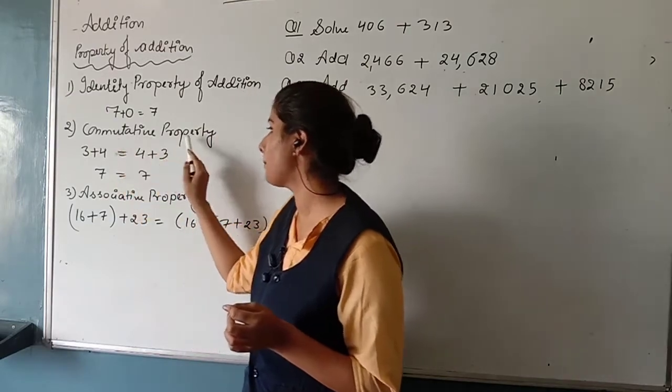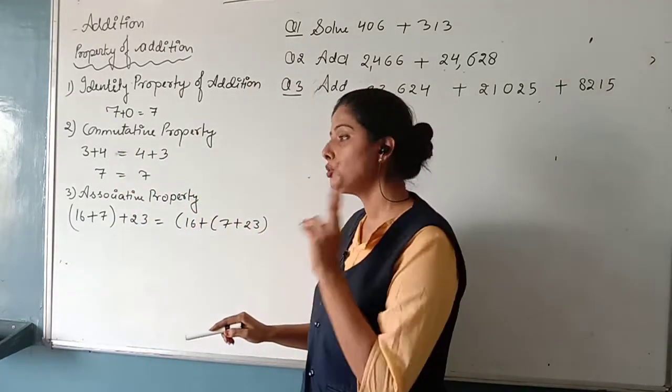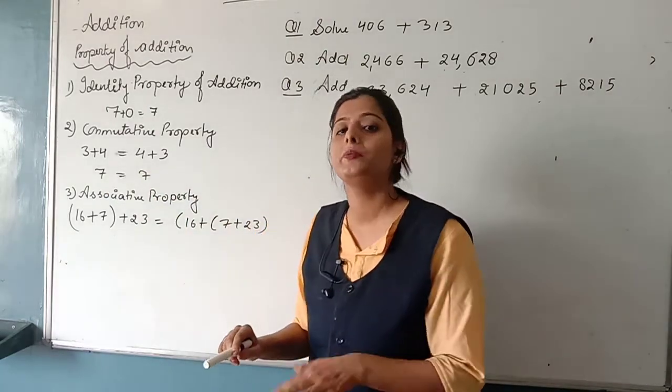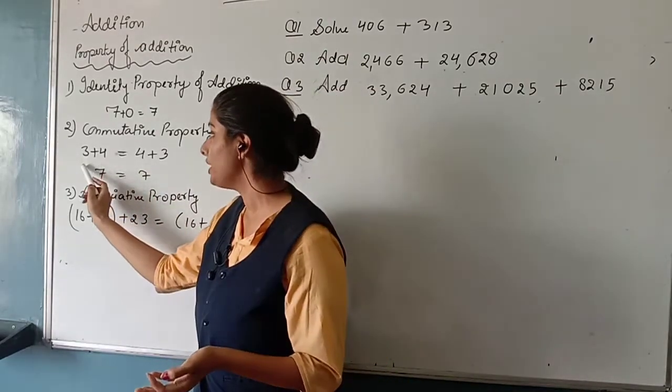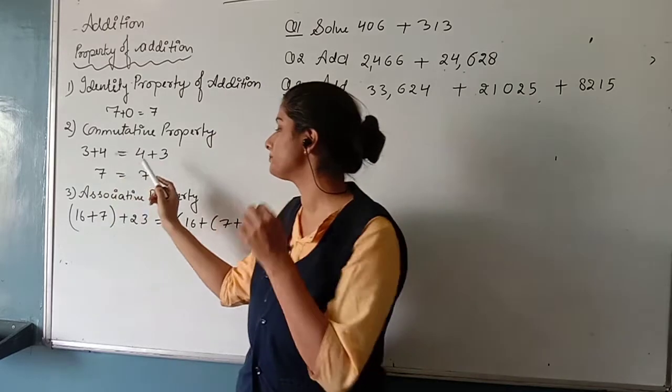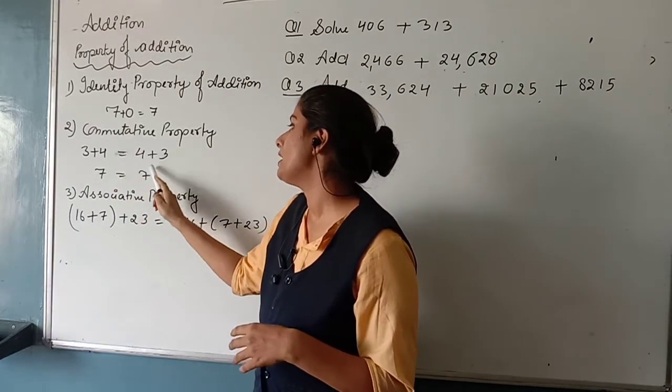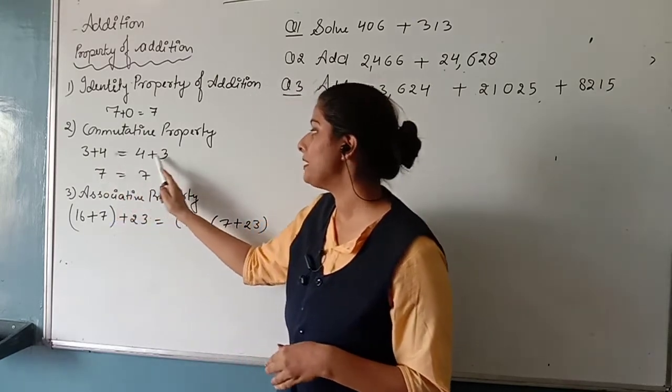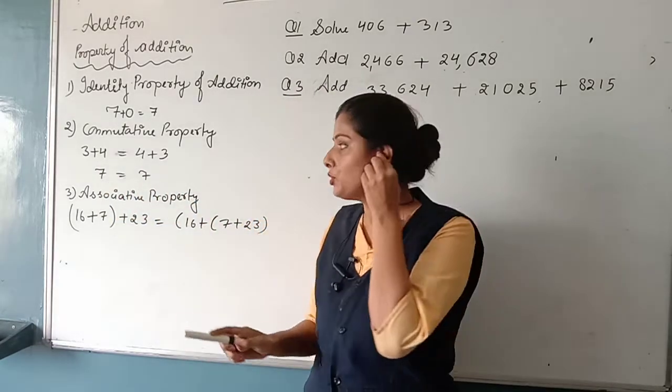Next is commutative property. Here two groups are similar numbers where the answer will be the same. Like 3 plus 4, 4 plus 3. 3 plus 4 is equal to 7, 4 plus 3 is equal to 7, so both answers are the same.